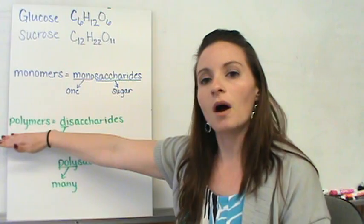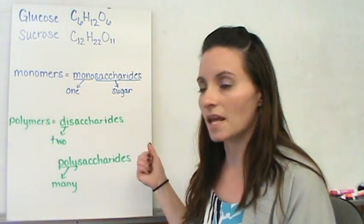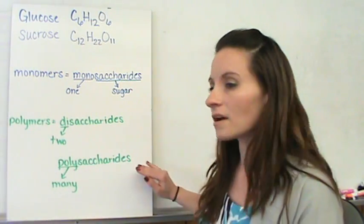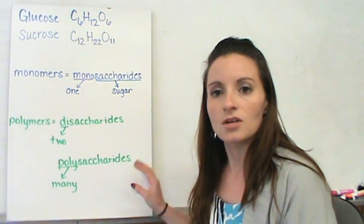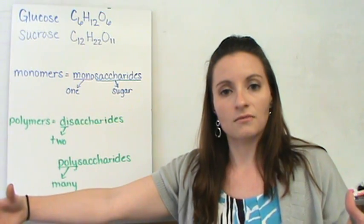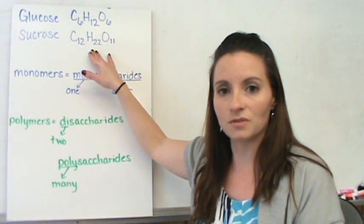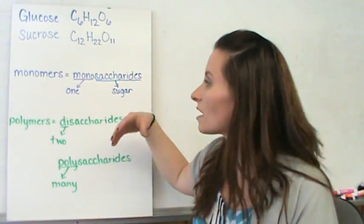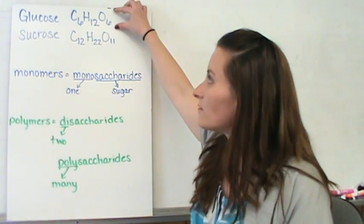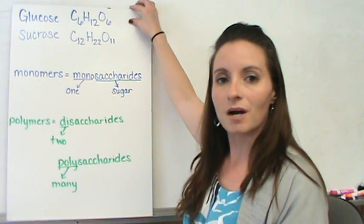The polymers of carbohydrates have two different names. We have disaccharides, which is two sugars, or polysaccharides, which is many sugars. The long chains of starches are polysaccharides. When we have just two sugars, for instance, sucrose is two different sugar molecules put together, two monosaccharides put together. That would be a disaccharide. When we have an individual sugar molecule, like glucose, that is called a monosaccharide.